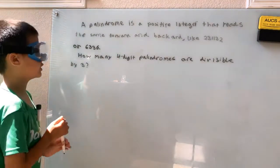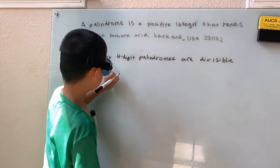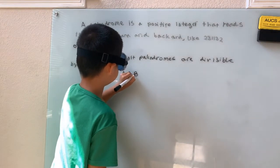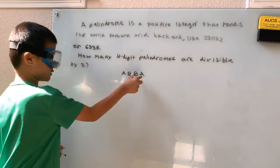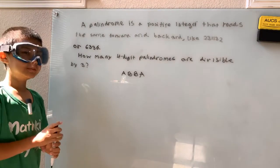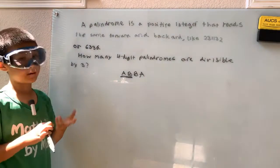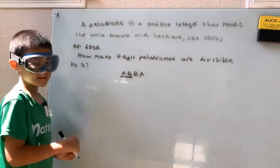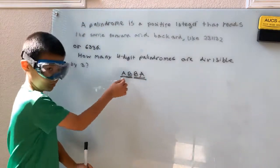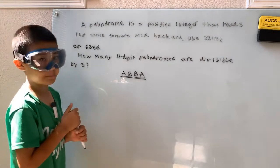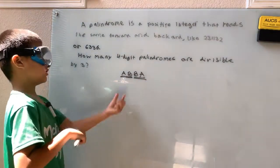Every four-digit palindrome looks like ABBA, because the first two digits are automatically mirrored over to the other two digits. So we really only need to look at AB — how many possibilities are there for AB — because whatever AB is, it's going to get mirrored over to BA, giving us the palindrome ABBA.